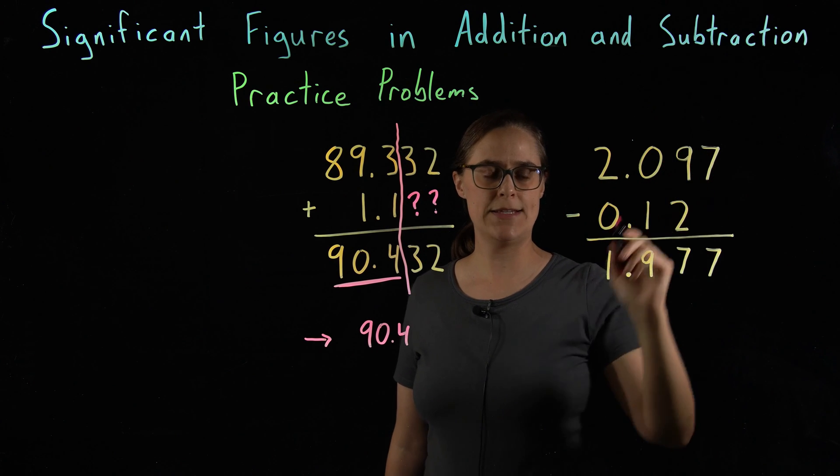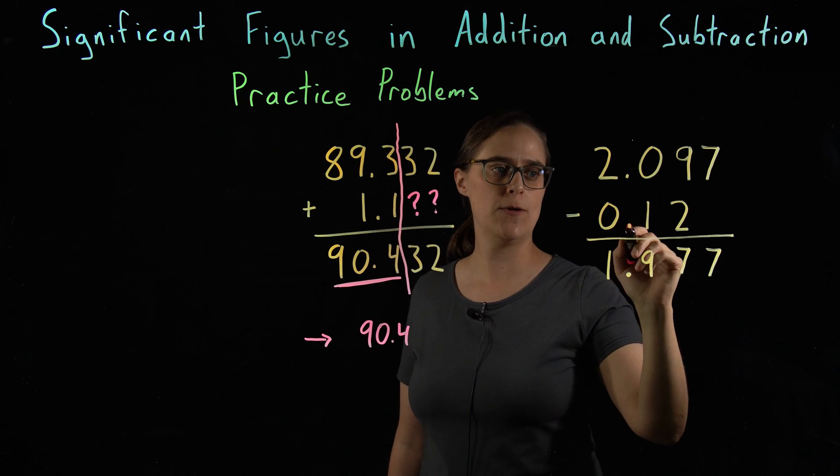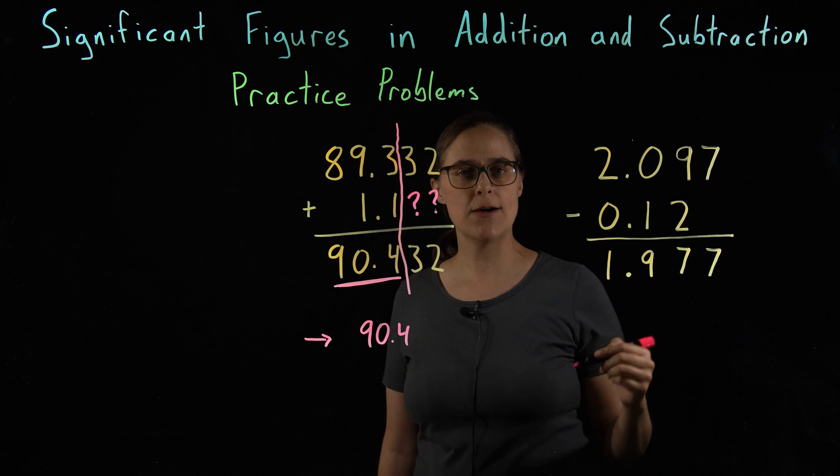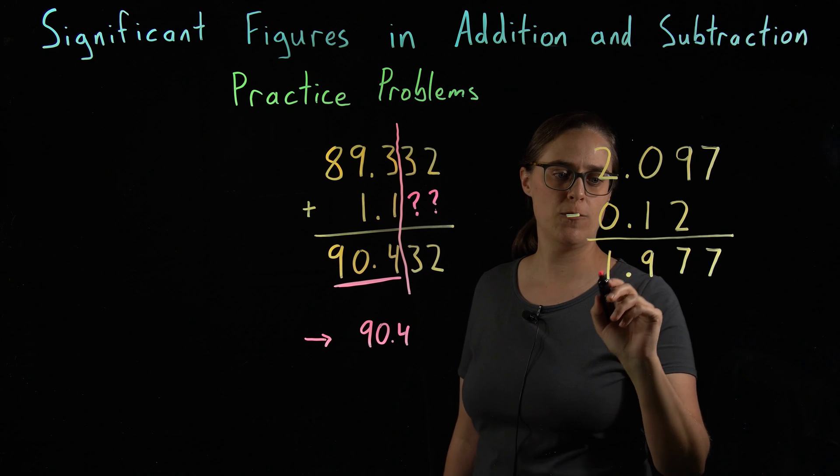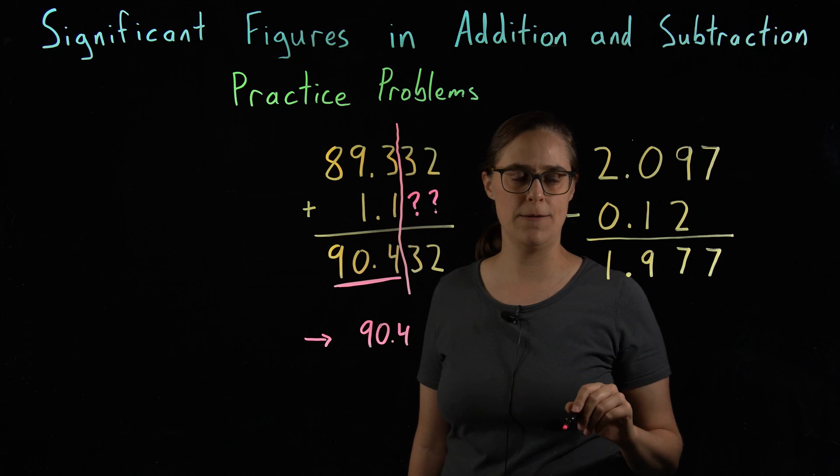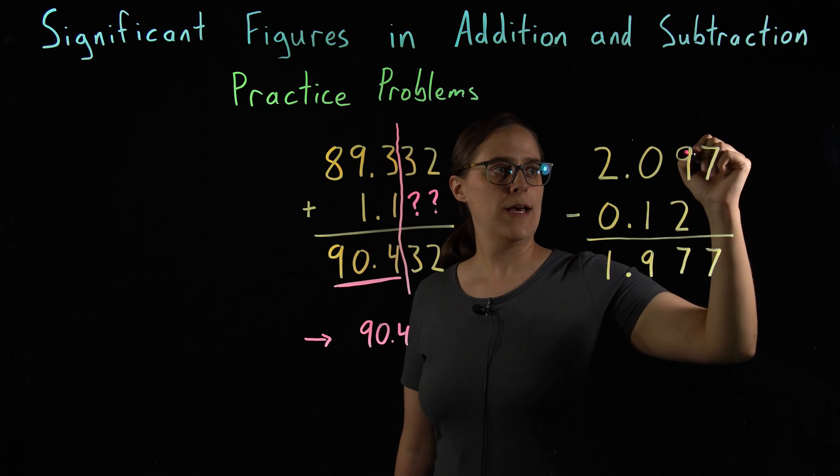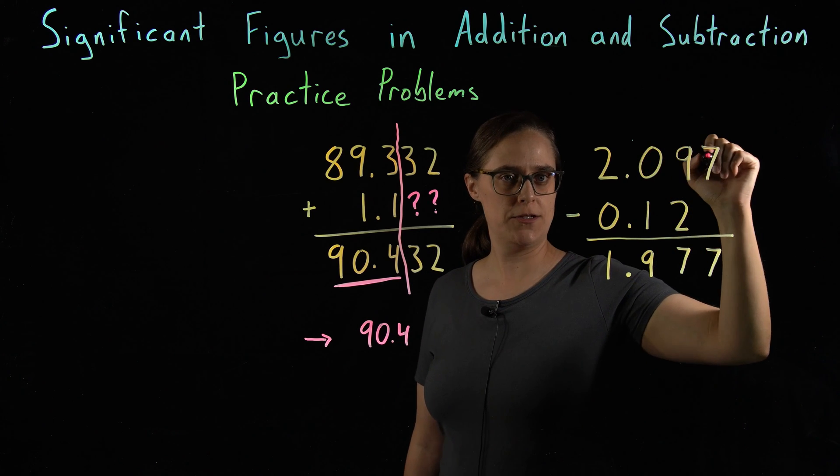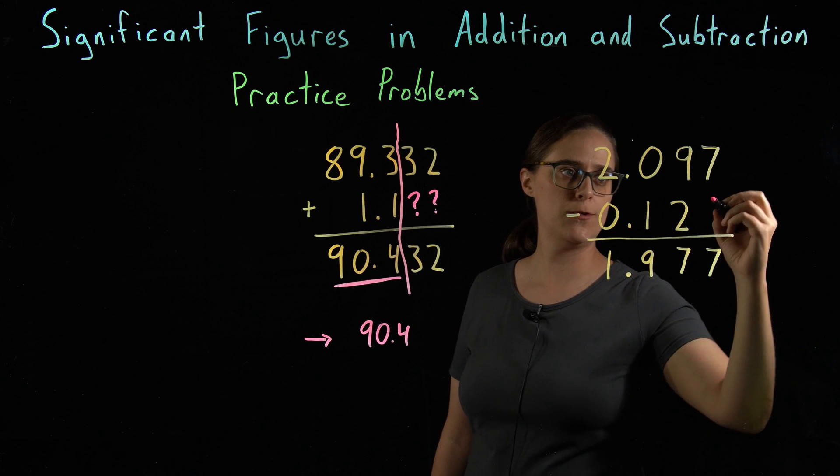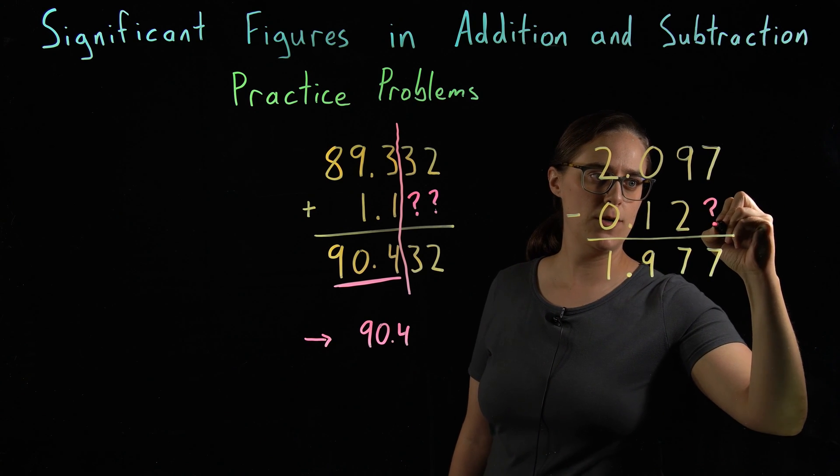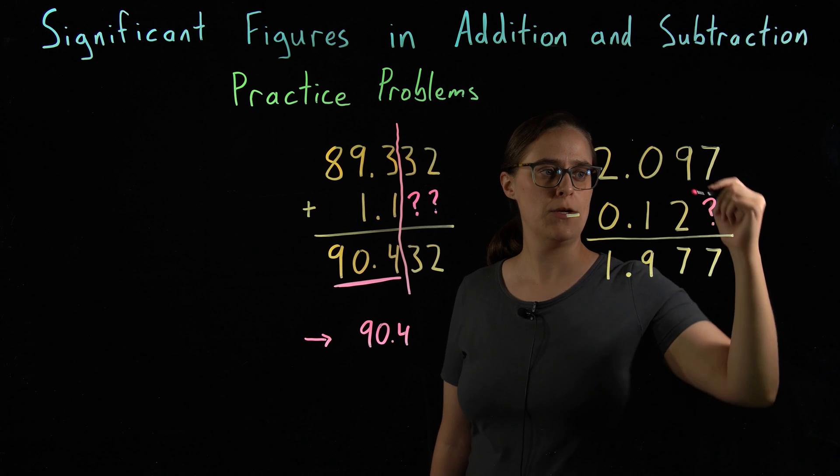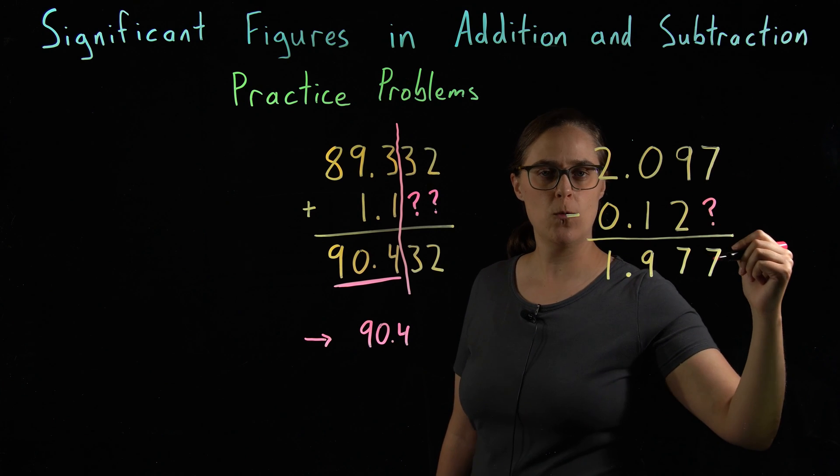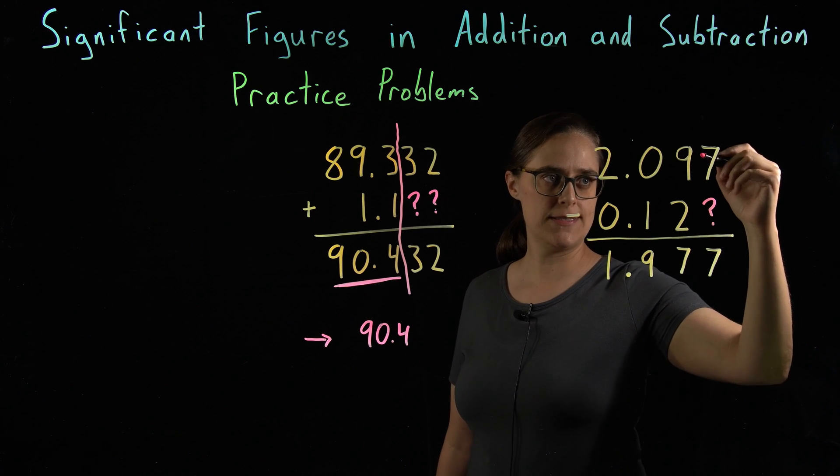Now let's look at the second problem, 2.097 minus 0.12. A calculator would give you the answer of 1.977. However, our first number, we know three digits after a decimal place. Second number, we only know 2. We do not know what this third digit was. We do not know what would have been subtracted from this 7.